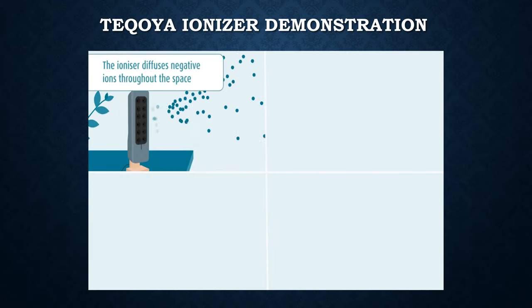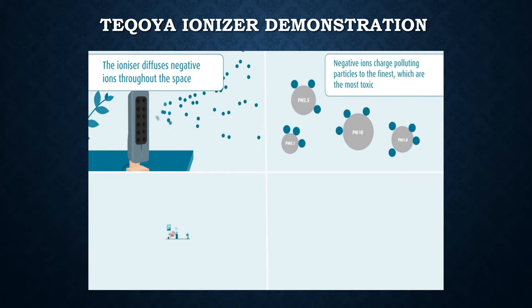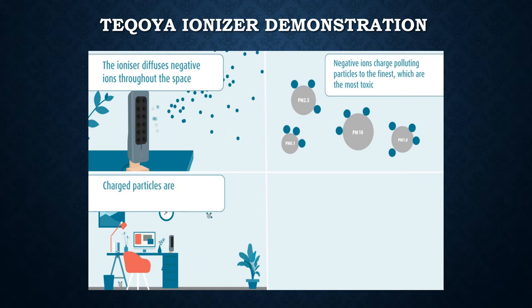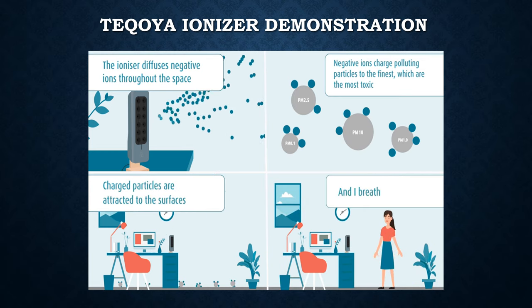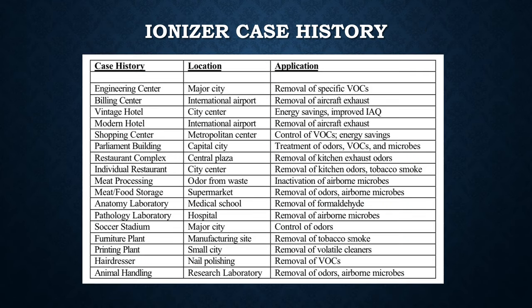In a Takeoia Ionizer demonstration, you can see ions being emitted from the ionizer — they attach themselves to particles in the air and the air is clean. In ionizer case history examples, you can see real-world examples of an ionizer cleaning the air, whether it's volatile organic compounds, odors, or tobacco smoke.